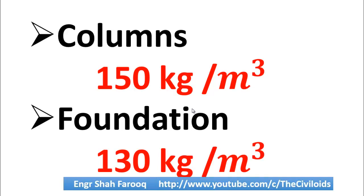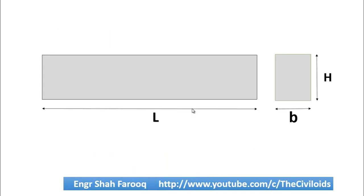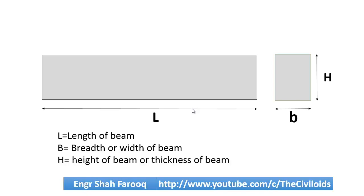Using these values you can design any RCC structural member like beam, column, or foundation. This method can be used only in emergency cases or when you have short time for the design process. Now let's do a practical problem by this method — how can we determine the quantity of steel required for different construction work like column, beam, foundation, and slab. For this purpose, let's select a beam of length L, width B, and height or thickness H.